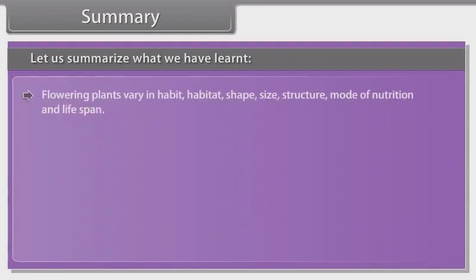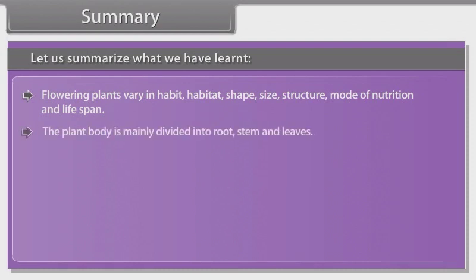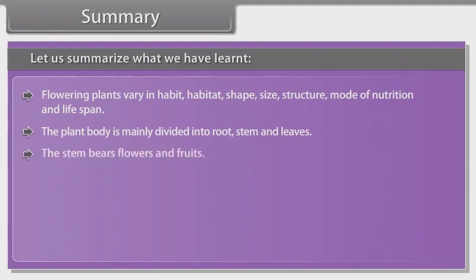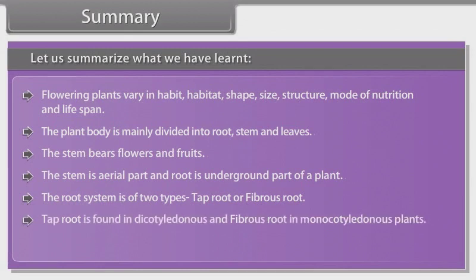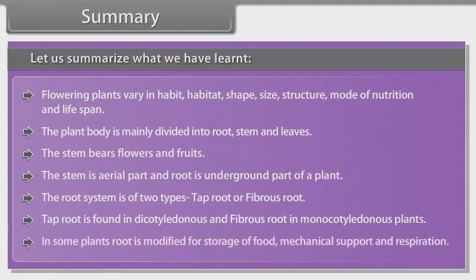Summary: Flowering plants vary in habit, habitat, shape, size, structure, mode of nutrition and lifespan. The plant body is mainly divided into root, stem and leaves. The stem bears flowers and fruits. The stem is the aerial part and root is the underground part of a plant. The root system is of two types: tap root or fibrous root. Tap root is found in dicotyledonous plants and fibrous root in monocotyledonous plants. In some plants, root is modified for storage of food, mechanical support and respiration.